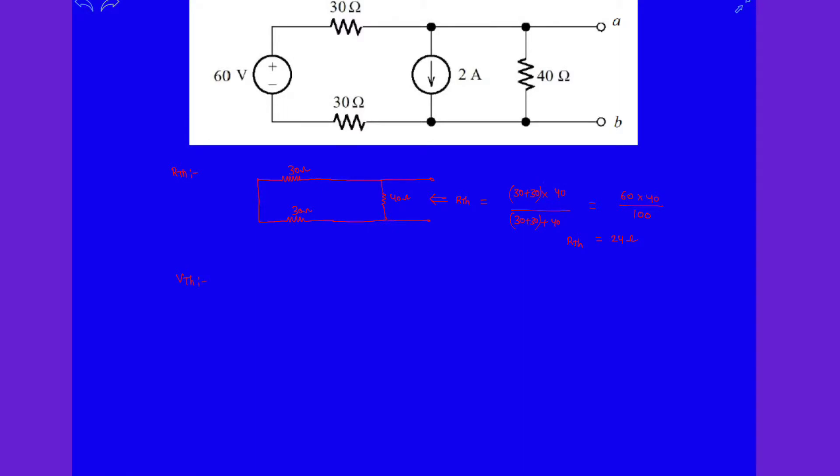Now let's calculate for V_th. Clearly this 60 volt voltage source is in series with both these resistances, 30 ohm and 30 ohm. So let's draw another further simplified circuit: 60 volt in series with 60 ohm resistance, because these two 30 ohm resistances are in series.